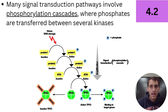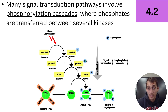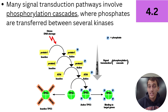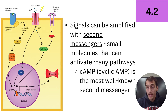Many signal transduction pathways involve phosphorylation cascades where phosphates are transferred between several different kinases. Protein one is inactive until it's phosphorylated — it has a phosphate and now it's active. Then it passes that phosphate to protein two, which is active once it has that phosphate. Then another protein gets that phosphate group transferred and now it's active, causing a cellular response. So a lot of signal transduction pathways involve phosphorylation cascades — passing a phosphate along like a relay race — until it reaches the goal.